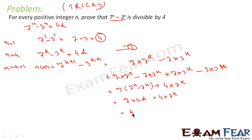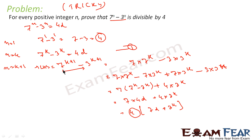So what we get is 4 common times (7d plus 3^k). This is also a multiple of 4. So we can prove that the LHS, which is 7^(k+1) minus 3^(k+1), equals 4 times some number, meaning this expression is also divisible by 4.